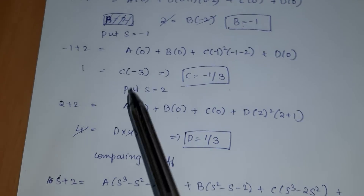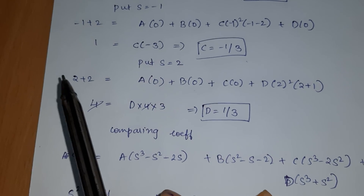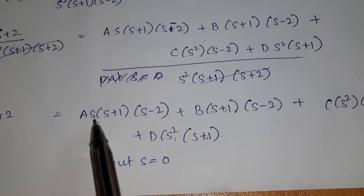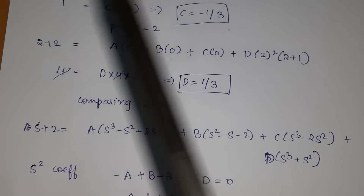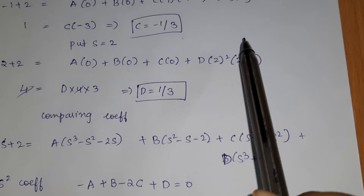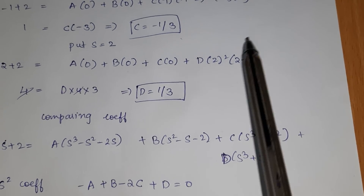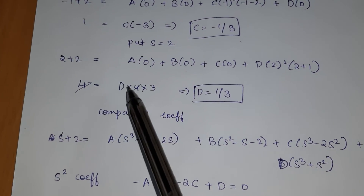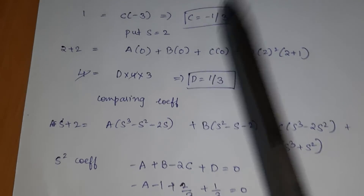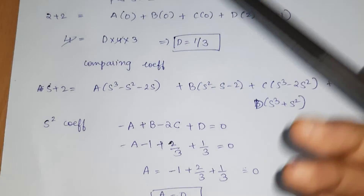Now put s = 2. When s = 2, the terms with A, B, and C all become zero. Only D remains: D·s²·(s+1) = D·4·3 = 12D. So (2+2) = 4 = 12D, and the 4s cancel, giving D = 1/3.